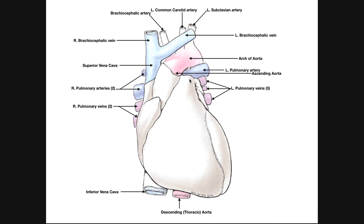All this stuff up here is where the base of the heart is. These are what we call the great vessels, and they are either coming into or originating from the base of the heart. So base is superior, and the apex is inferior, pointing toward the patient's left.